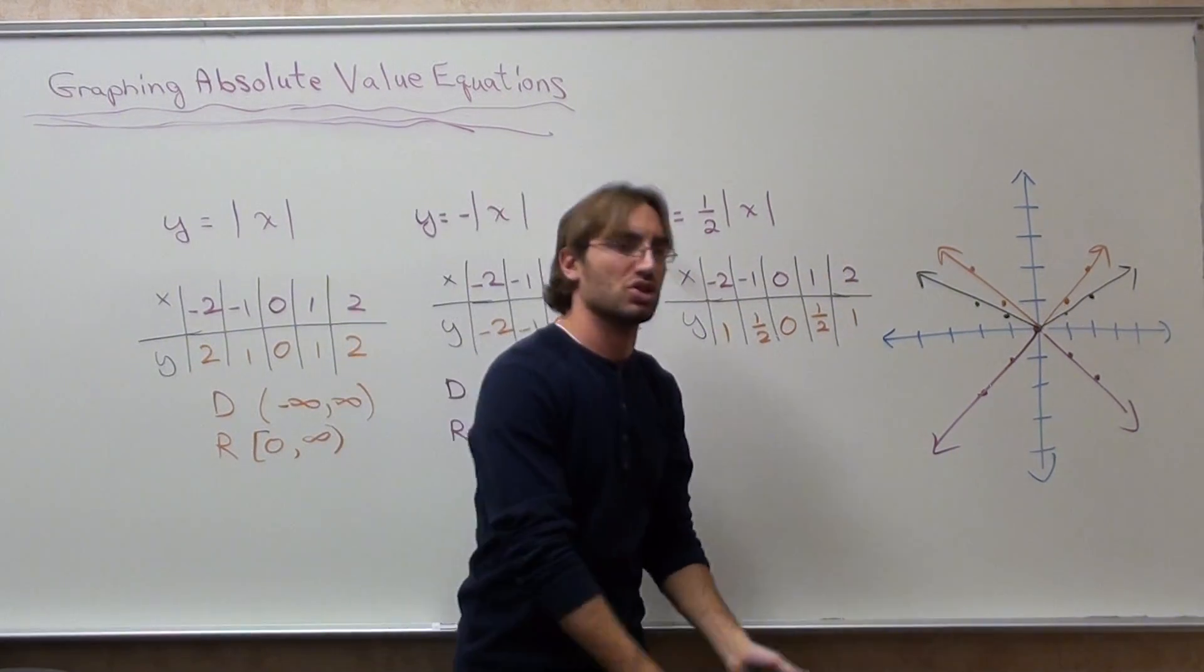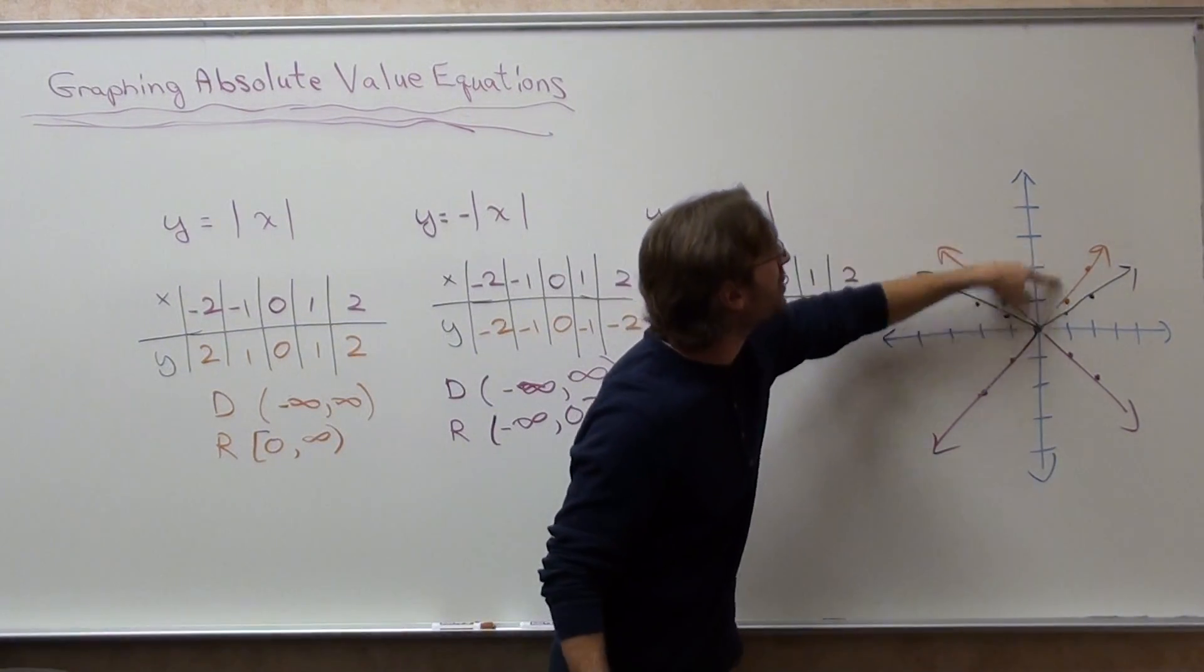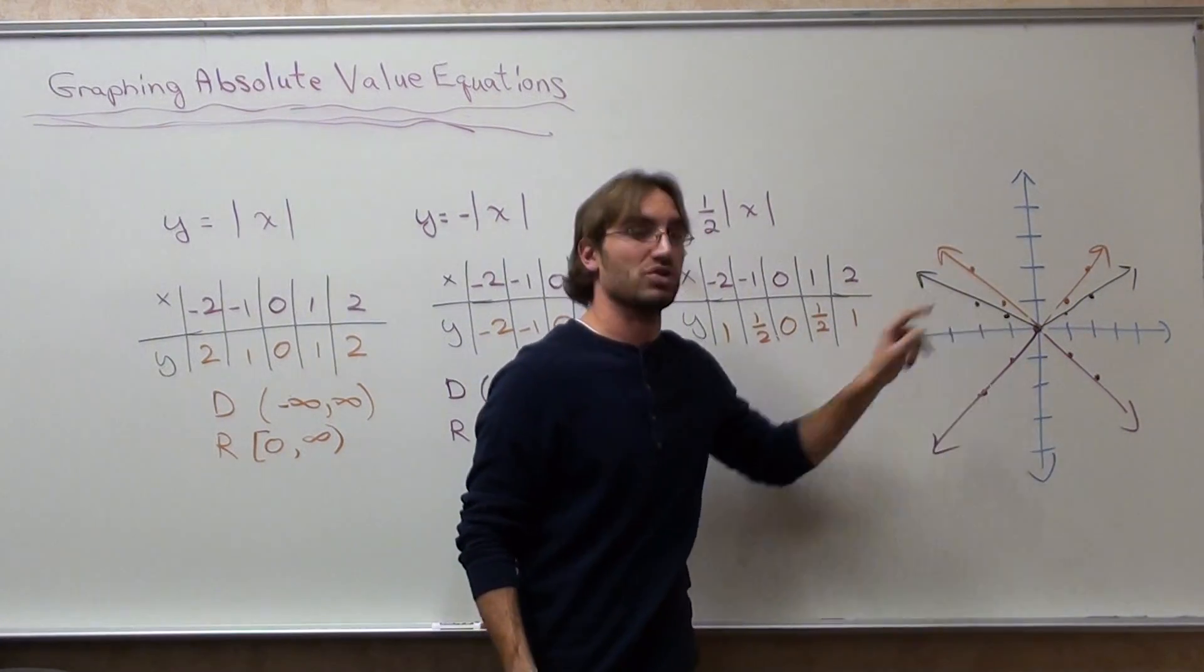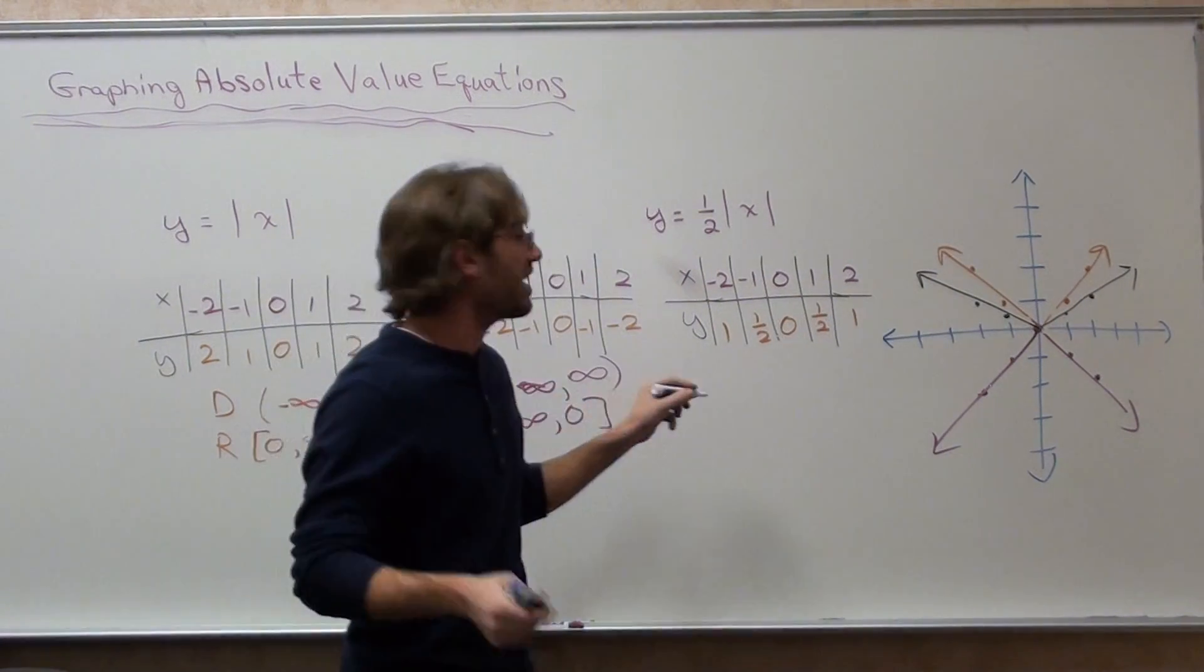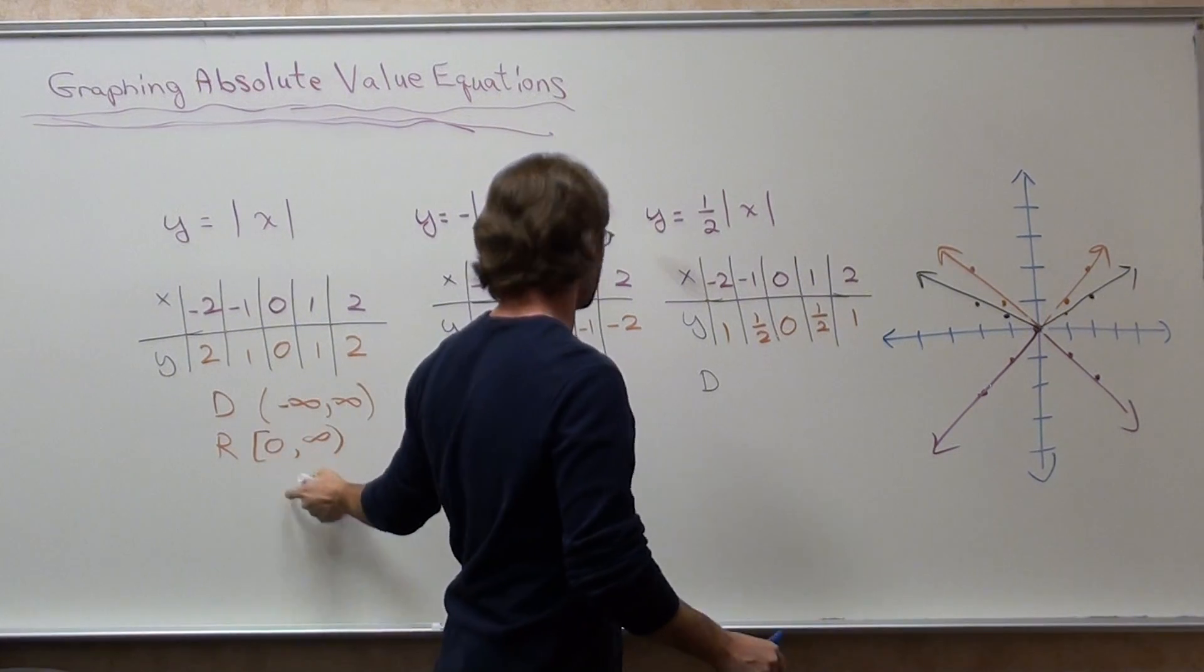But if I had a five, it would just go up like this, super fast, much faster than the first one. Domain and range are the same as the first problem.